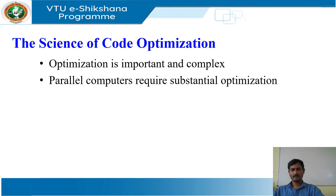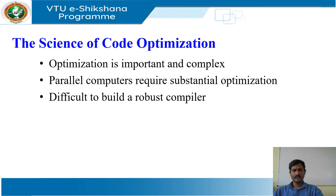Optimization is more important because massively parallel computers require substantial optimization or their performance suffers by orders of magnitude. With the likely prevalence of multi-core machines, all compilers will have to face the problem of taking advantage of multiprocessor machines. While it is very difficult, it is possible to build a robust compiler, so an extensive and useful theory has been built up around the problem of optimizing code. The use of a rigorous mathematical foundation allows us to show that an optimization is correct and produces the desirable effect for all possible inputs.